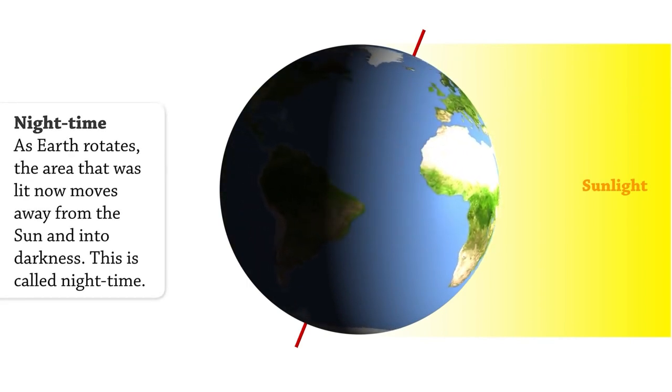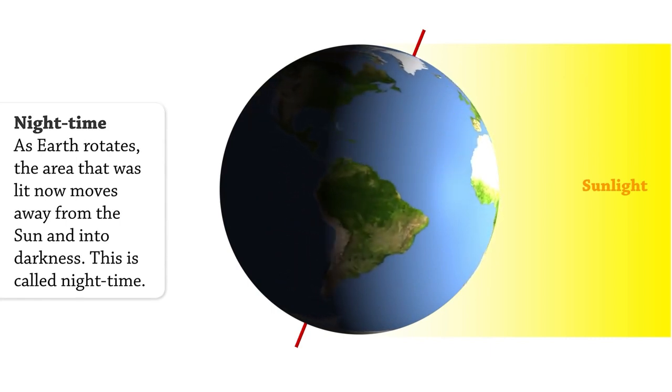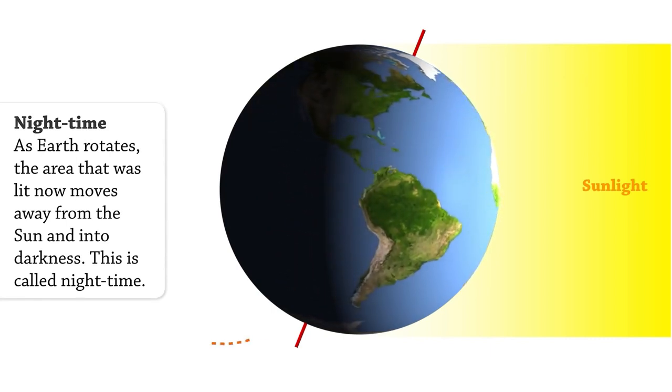As Earth rotates, the area that was lit now moves away from the sun and into darkness. This is called nighttime.